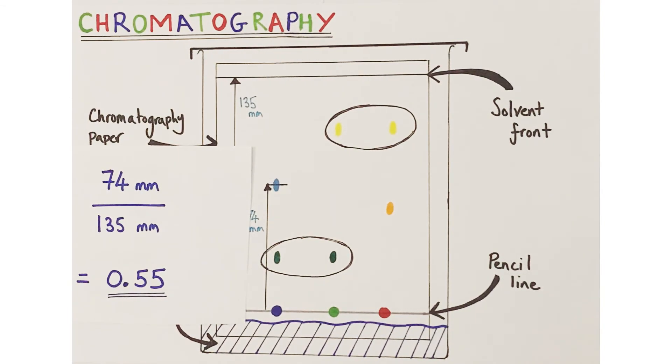If another pigment spot had the same RF value and had the same color, it would be highly likely that it was indeed the same pigment.